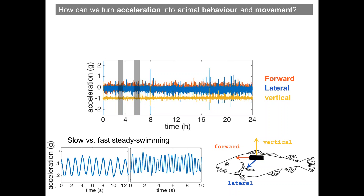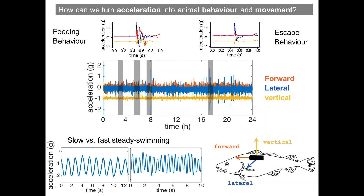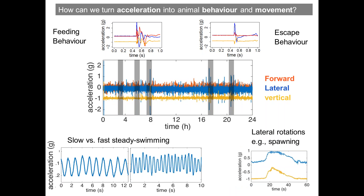If we're interested in much more fine-scale movements — such as consumption rates, feeding behavior, or escape behaviors — these signals occur over very short time scales. In the case of feeding behaviors, we have an event that occurs over 250 milliseconds. The same is the case for escape responses, and these are important to quantify because they mean very different things in terms of energy budgets. We can also relate acceleration signals to movements during spawning or nest-building activities, such as lateral rotations in some species.